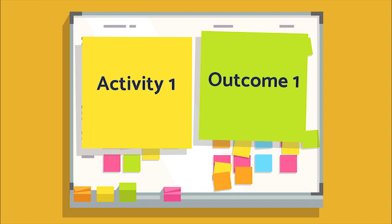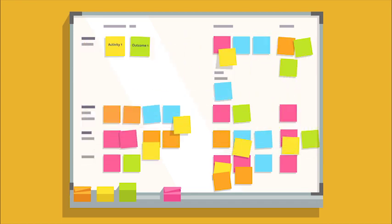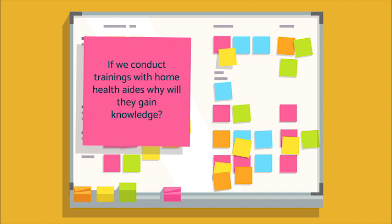A yellow sticky note labeled 'activity one' and a green sticky note labeled 'outcome one' appear and contract to their places in the logic model on the whiteboard. Jackson then engages his group in a discussion about assumptions. For example, conducting trainings won't automatically lead to an increase in knowledge. A pink sticky note appears reading: 'if we conduct trainings with home health aids, why will they gain knowledge?'